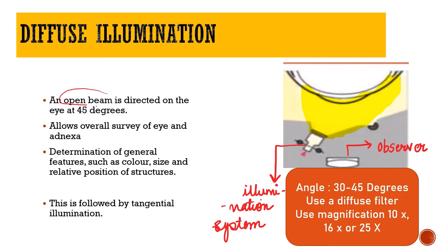In diffuse illumination, the beam is open — we are allowing the light to fall almost on the entire eyeball or the cornea. You can see that the illumination system projects a very diffuse light, almost covering the entire surface of the cornea. The slit beam is an open beam, meaning the light we are throwing is more diffuse. Diffuse illumination can also be compared to a torchlight examination, where the illumination is more diffuse so we see the entire eyeball at once.